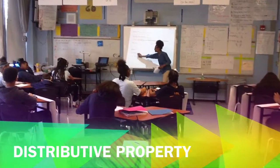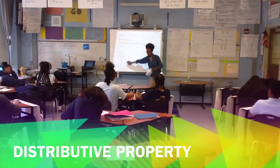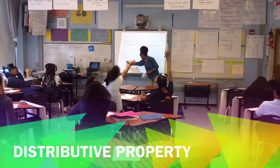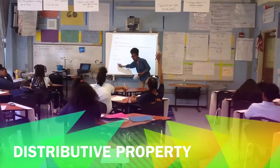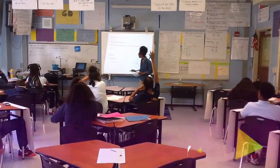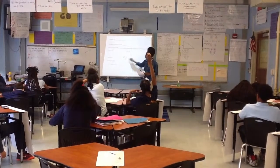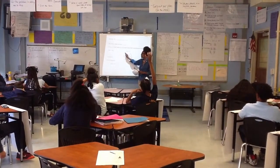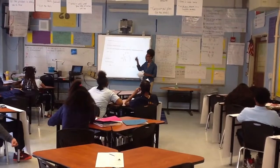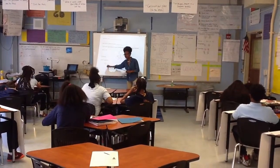We're distributing our numbers. Let's do the first thing together. I have 5 on the outside. Whenever I have a whole number in parentheses, what operation am I doing? Type. Perfect. So help me distribute number 1.